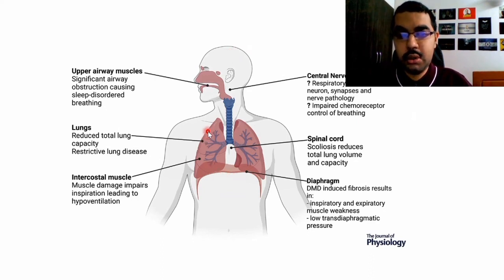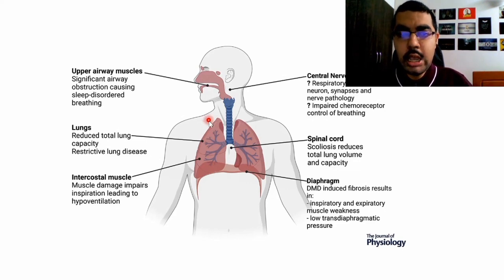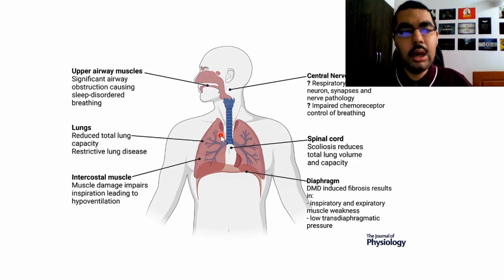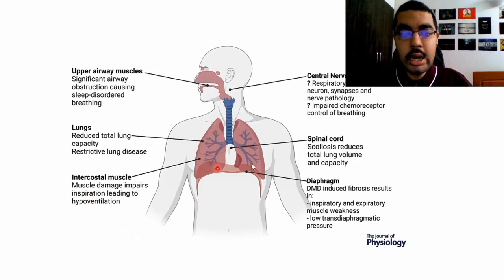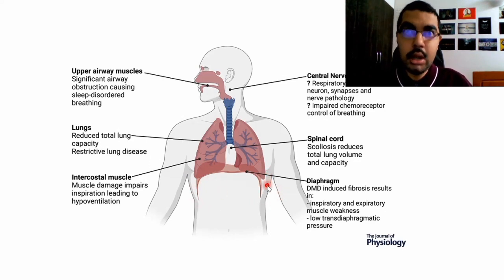Now for the dangerous complications of DMD: the lungs themselves are usually unaffected, but problems arise almost always due to the muscles involved in breathing. When the intercostal muscles and the diaphragm are affected, we get something called restrictive lung disease — because these two muscles don't allow the chest to expand completely. The intercostal muscles are the muscles between the ribs, and the main muscle is the diaphragm. Regular breathing exercises are strongly recommended to prevent this.